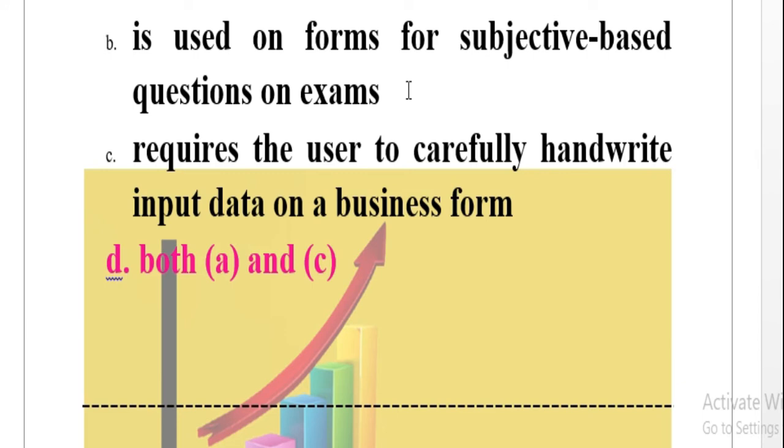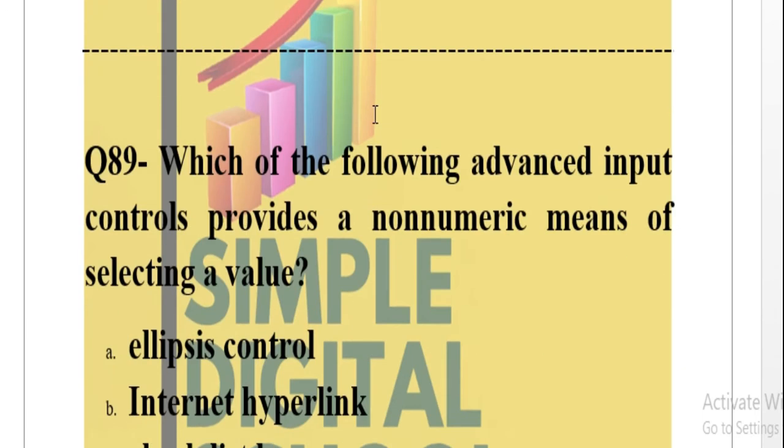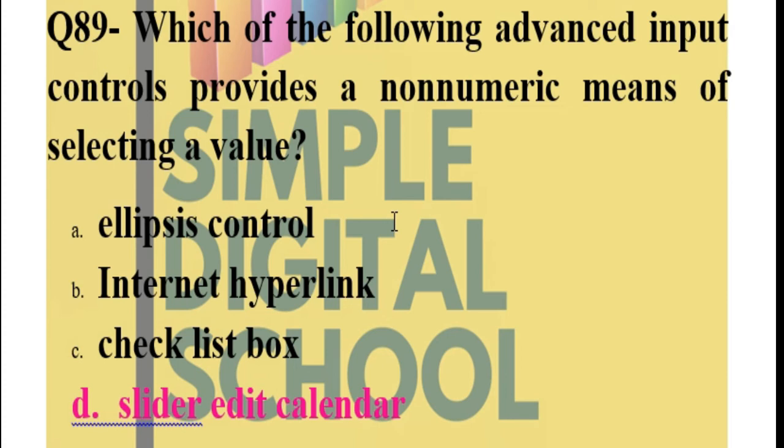Question number 89: Which of the following advanced input controls provides a non-numeric means of selecting a value? Ellipsis control, internet hyperlink, checklist box, or slider edit calendar. The answer here is slider edit calendar, which is a non-numeric selection of data.